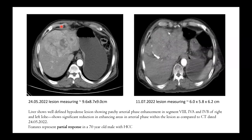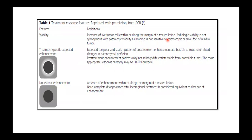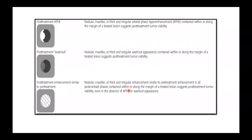Here we can see a large lesion showing arterially peripheral enhancing components with peripheral lipiodol deposition. There are different features on imaging that can help us determine whether the tumor is viable or not. No lesion enhancement — the absence of enhancement within or along the margin of the lesion — makes it non-viable. Post-treatment arterial phase hyperenhancement, post-treatment washout, or post-treatment enhancement similar to pre-treatment are all suggestive of viable tumor.